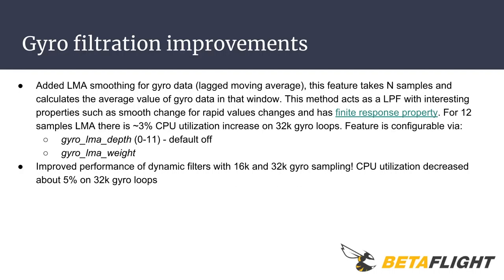Another feature added in Betaflight 3.4 is LMA smoothing for gyro data. LMA stands for lag moving average. This feature takes samples and calculates the average value of gyro data in that window. This method acts as a low-pass filter with interesting properties, such as smooth change for rapid value changes and a finite state property. For 12-sample LMA, there is about a 3% increase in CPU utilization on 32K gyro loops. The feature is configurable via gyro_lma_depth and gyro_lma_weight.